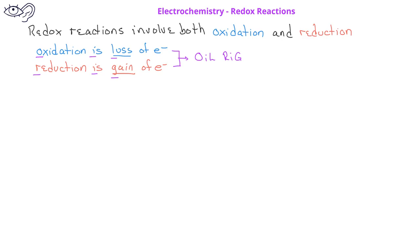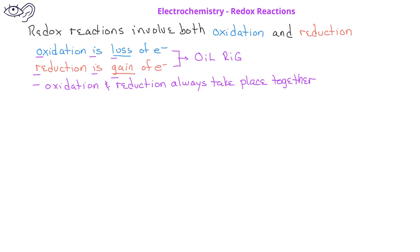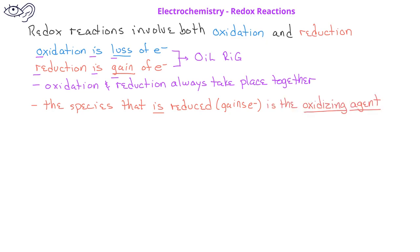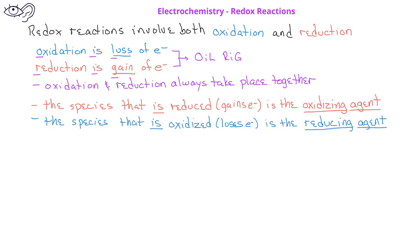Oxidation and reduction always take place in the same reaction, because if something is losing electrons, there must be something else present to gain the electrons. The species that is reduced, or gains the electrons, is also known as the oxidizing agent, since it causes another species to be oxidized. The species that is oxidized, or loses electrons, is also known as the reducing agent, since it causes another species to be reduced.